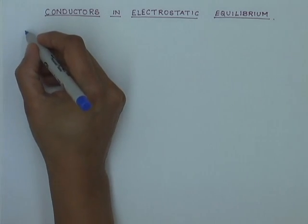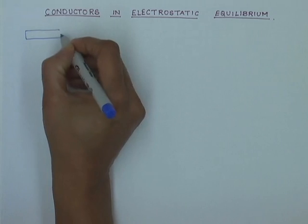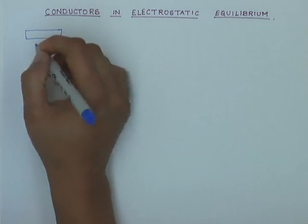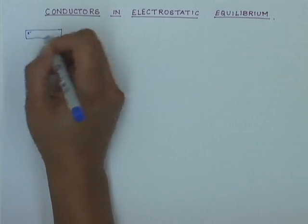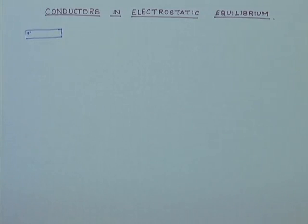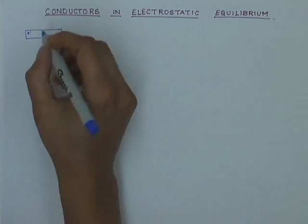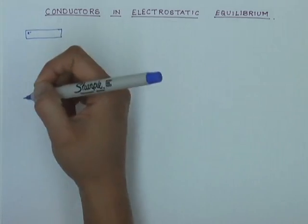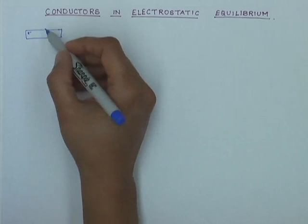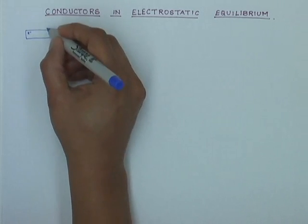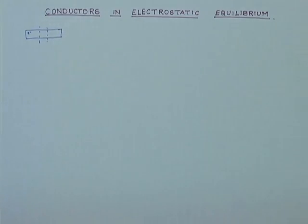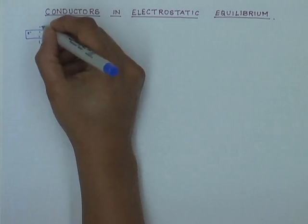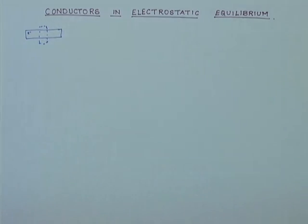Conductors are materials in which electrons are not tightly bound to any atom, so there are electrons moving about pretty freely in the conductor — this is also called sometimes an electron fluid. This poses a problem when we try to apply Gauss law to the conductor, because it is very difficult to tell what is the charge enclosed in any Gaussian surface, since this electron fluid is always moving around and the charge enclosed by a closed Gaussian surface is always going to change.